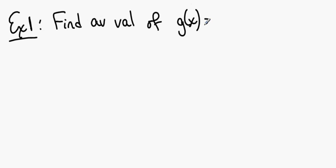So, by example, I will probably go longer than 5 minutes, rats. Let's find the average value of g of x, which is the square root of 9 minus x squared, on the interval from negative 3 to 3.